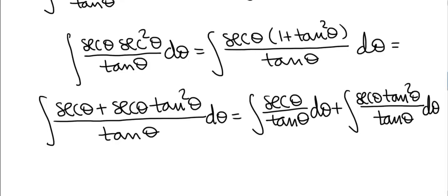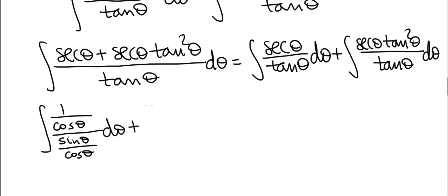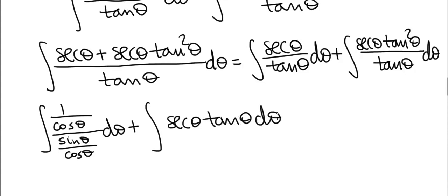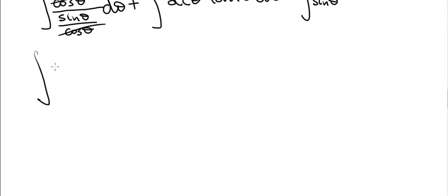For the first integral, we convert to sines and cosines: sec(θ)/tan(θ) = (1/cos θ)/(sin θ/cos θ) = 1/sin(θ). In the second integral, one tangent cancels, leaving sec(θ)·tan(θ). So we have the integral of 1/sin(θ) dθ plus the integral of sec(θ)·tan(θ). The integral of sec(θ)·tan(θ) is simply sec(θ), and 1/sin(θ) is csc(θ).